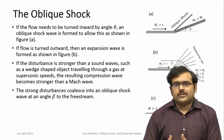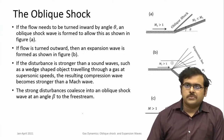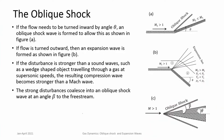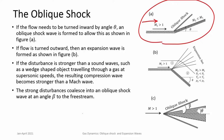When are oblique shocks formed? Whenever the flow has to take a turn. As depicted in this schematic, you have an oncoming flow which is supersonic — always remember that shock waves are found in supersonic flows. A supersonic flow is coming and then it faces a turn towards itself. When the flow turns towards itself, it forms an oblique shock.